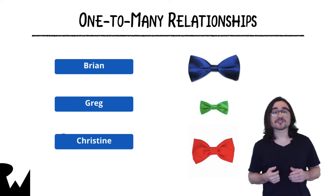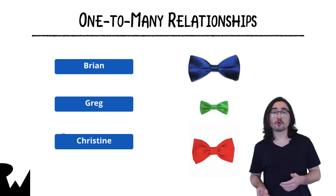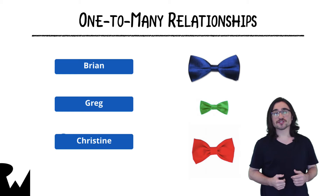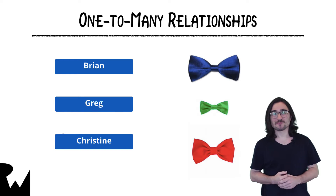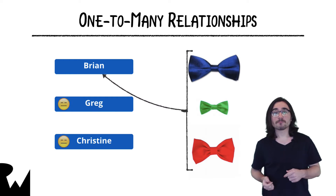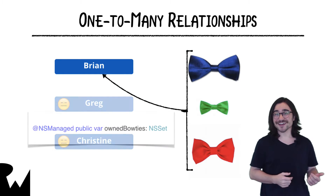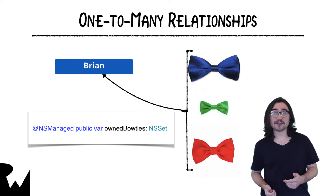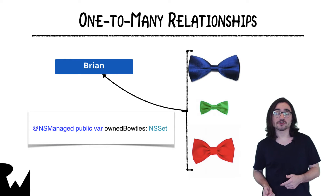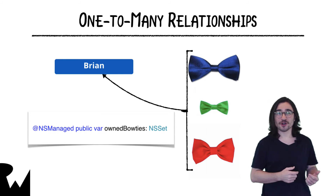Another possible case is that your application allows people to own more than one bowtie. This is what's known as a one-to-many relationship. Each bowtie could still only have one owner, but the user object's relationship would be renamed to something like owned bowties and would consist of a set of all bowties that have that particular person object as their owner.